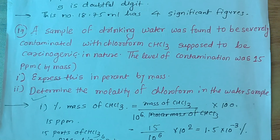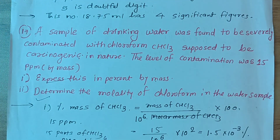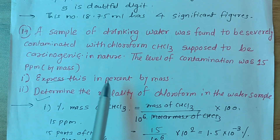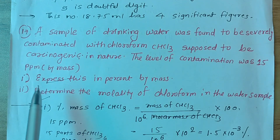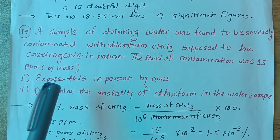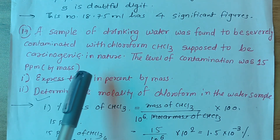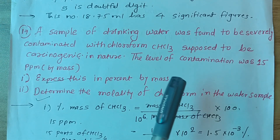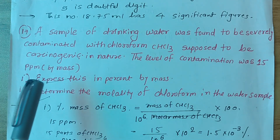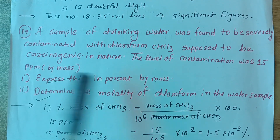अब अगला question है: एक sample drinking water का है जो chloroform से severely contaminated है, and it is carcinogenic in nature. The level of contamination is 15 ppm by mass। हमें दो चीज़ें express करनी हैं: पहला, 15 ppm को percentage by mass में express करना है।